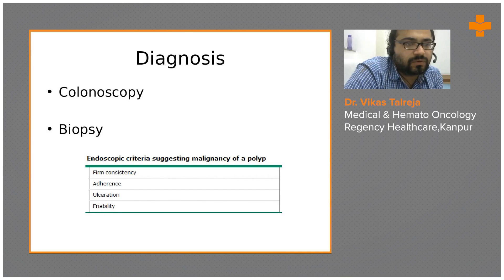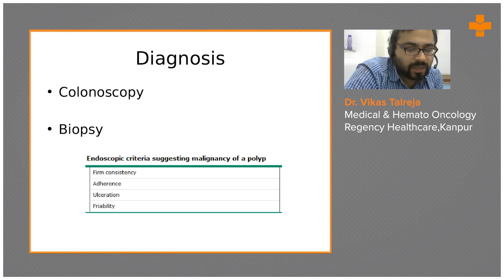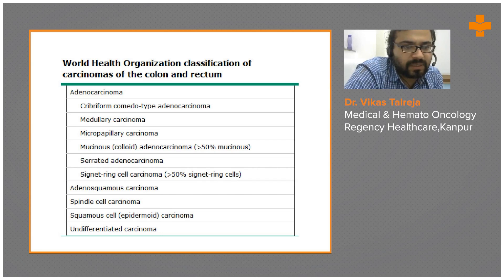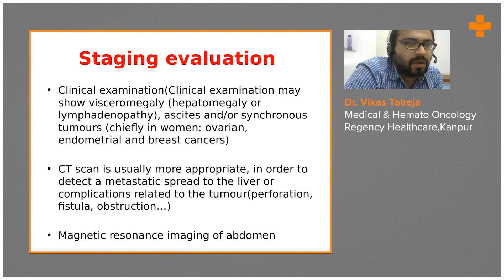The most easily available investigation is colonoscopy and biopsy. On biopsy, endoscopic criteria suggest malignancy in a polyp when you look at adherence, ulceration, and friability — indicating a polyp turning into a cancer. Histopathological classification includes adenocarcinomas, adenosquamous carcinomas, spindle cell carcinomas, squamous cell epidermoid carcinomas, and undifferentiated carcinomas, though therapeutically this classification does not have much implication.